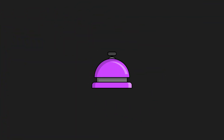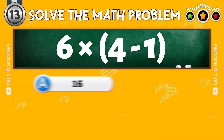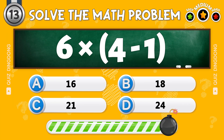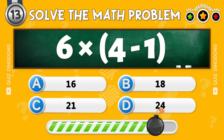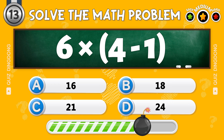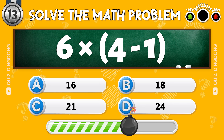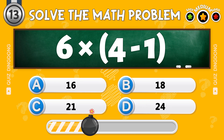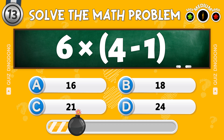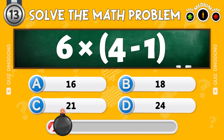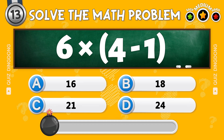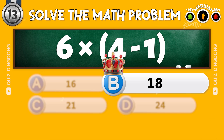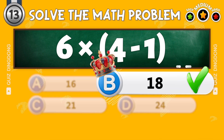Here's another one. What's 6 times 4 minus 1? Fantastic! The answer is 18.